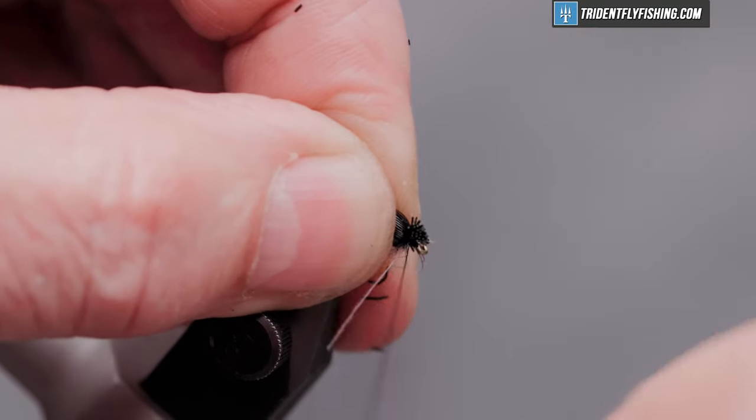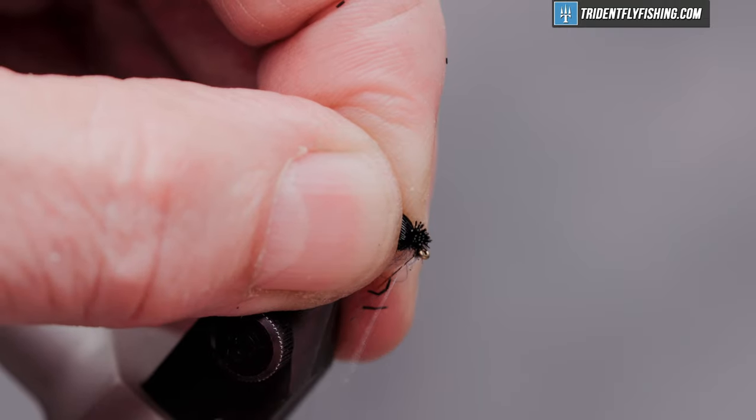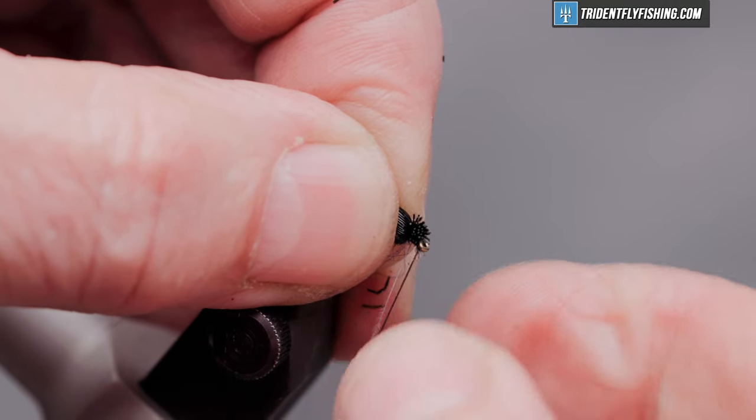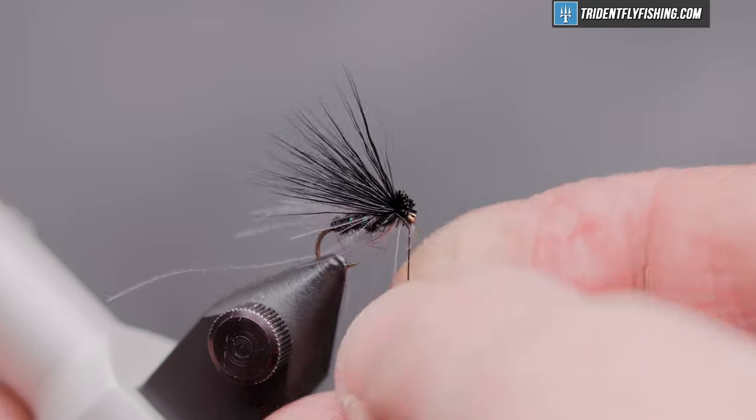Hold on to your material. Take two or three tight wraps. Jump to the front of the hook. And I probably want to reposition that or it's going to fall off. There we go.